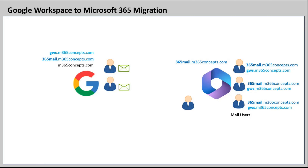If you are familiar with Exchange Hybrid deployment, when a migrated user sends an email to an on-premises user, that email is routed through the external email address. The external email address tells that this particular user is not part of this organization and where to route the request. In the same way, we will add the external email address to the mail user in Exchange Online so that emails can be routed to Google Workspace. If you have few users to migrate, you can create mail users manually, and if you have a large number of users, you can use a script to import users from a CSV file.